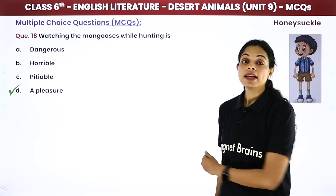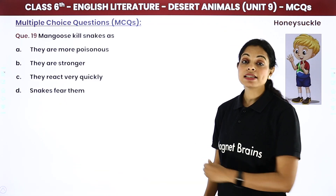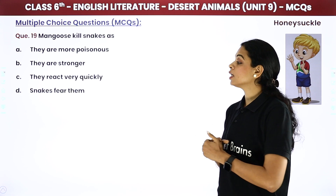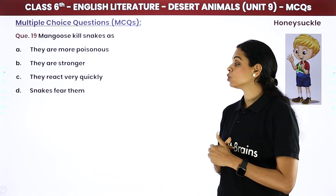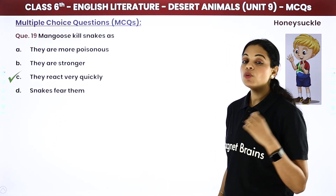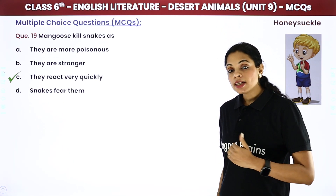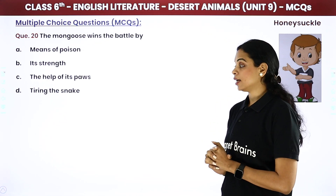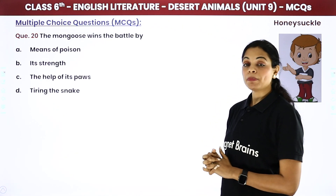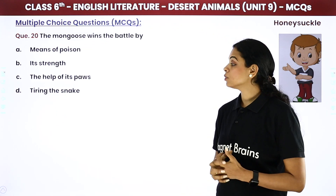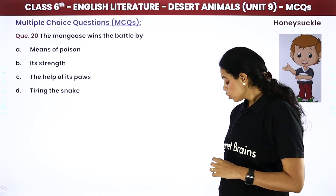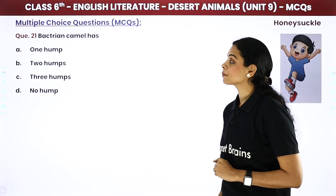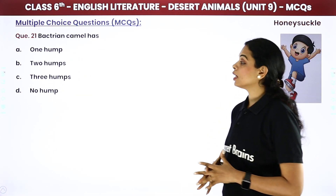It is a pleasure to watch a mongoose and a snake. Mongoose kills snakes — क्यों? Because they react very quickly — उनका reaction बहुत जल्दी होता है, आपको पता नहीं चलेगा कि वो अगली बार क्या करने वाले हैं। The mongoose wins the battle — mongoose यह battle कैसे जीतता है? वो snake को थका देता है — बहुत ज़्यादा थका देता है, उसके बाद उस पर attack करता है।